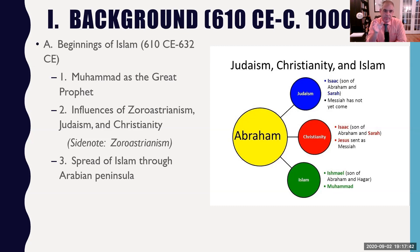Muhammad is connected to Zoroastrian communities, Judaism, and Christianity. In Muhammad's world, these three religions were well known, well established, and they certainly influenced society at this time. The key feature of these three religions was the belief in a single God. This monotheistic tradition certainly influences Islam. There are other influences these three religions seem to have on the development of Islam, and we see a lot of commonalities between the four religions.